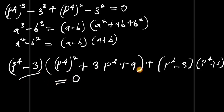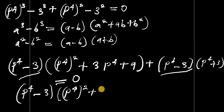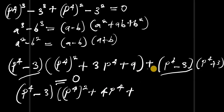We can see that p^4 minus 3 appears in both parts, so we factor it out. We have p^4 minus 3, multiplied by what remains. Combining terms gives p^4 squared plus 3p^4 plus p^4 plus 3, yielding 4 times p^4, plus 9 plus 3 equals 12. So we get p^4 minus 3 times the remaining bracket equals zero.